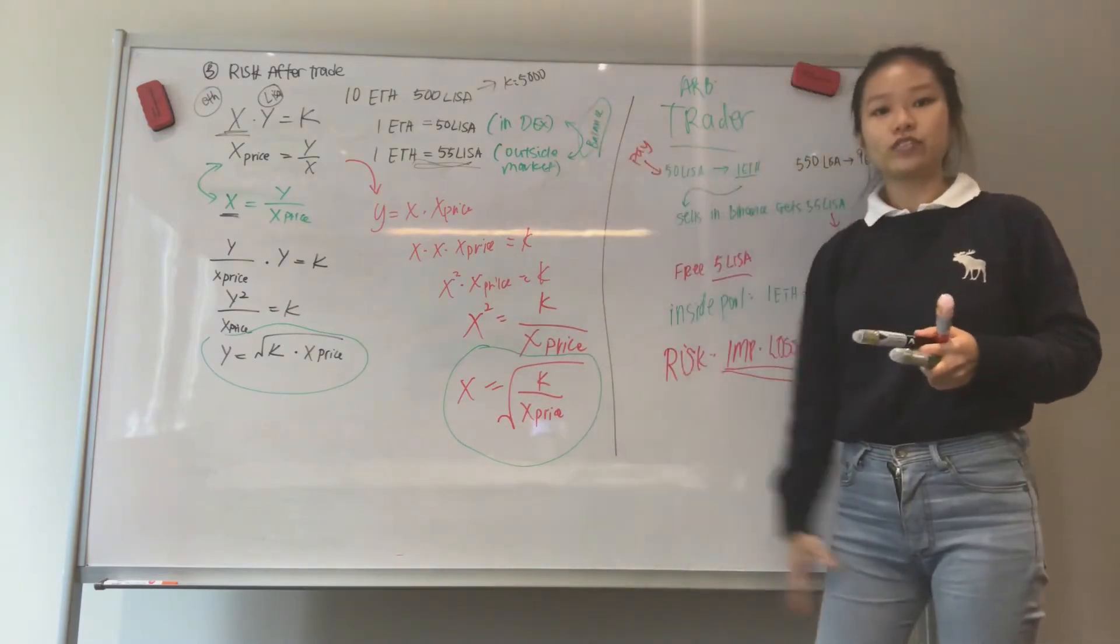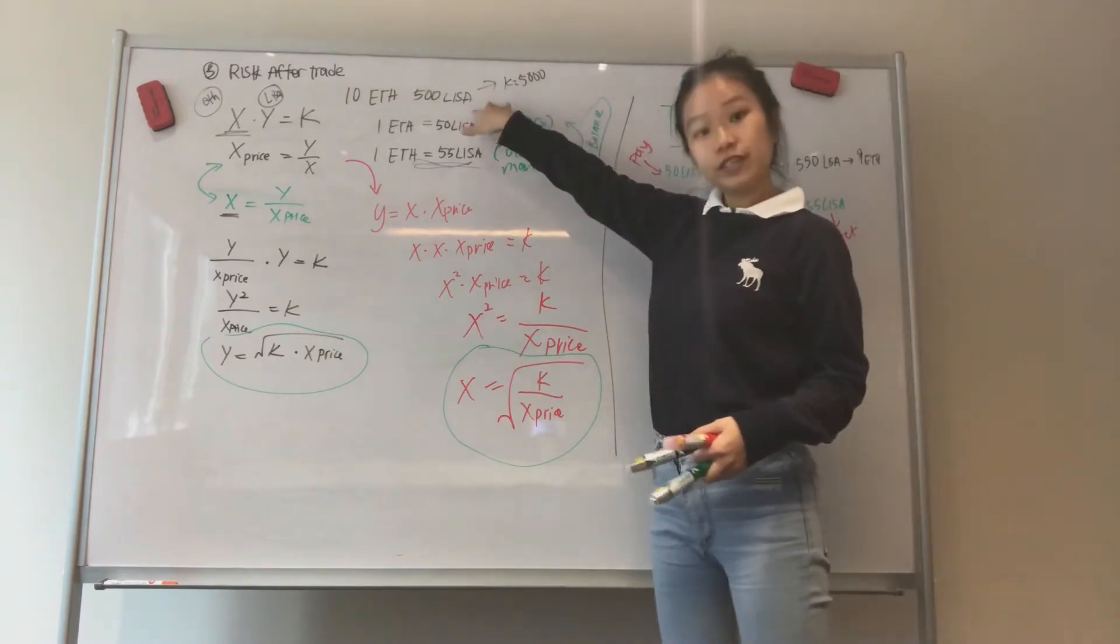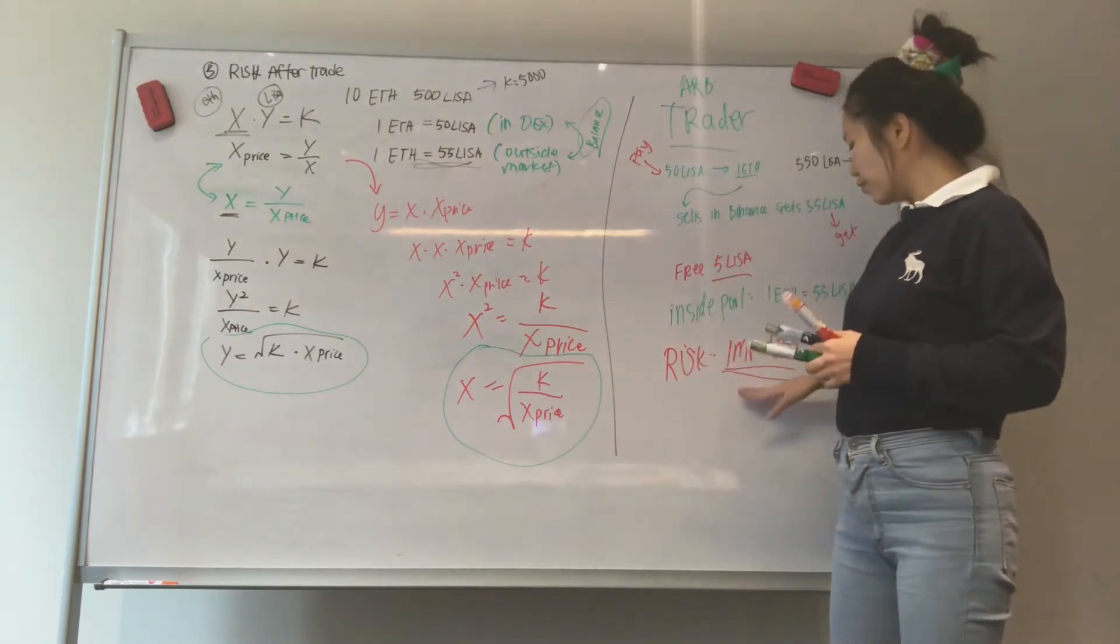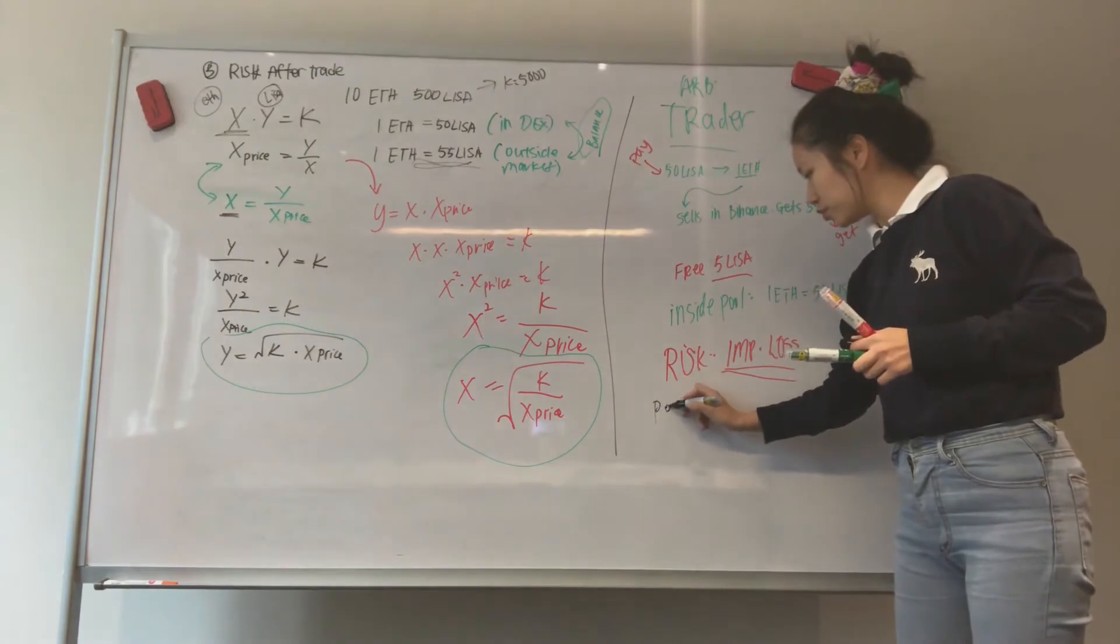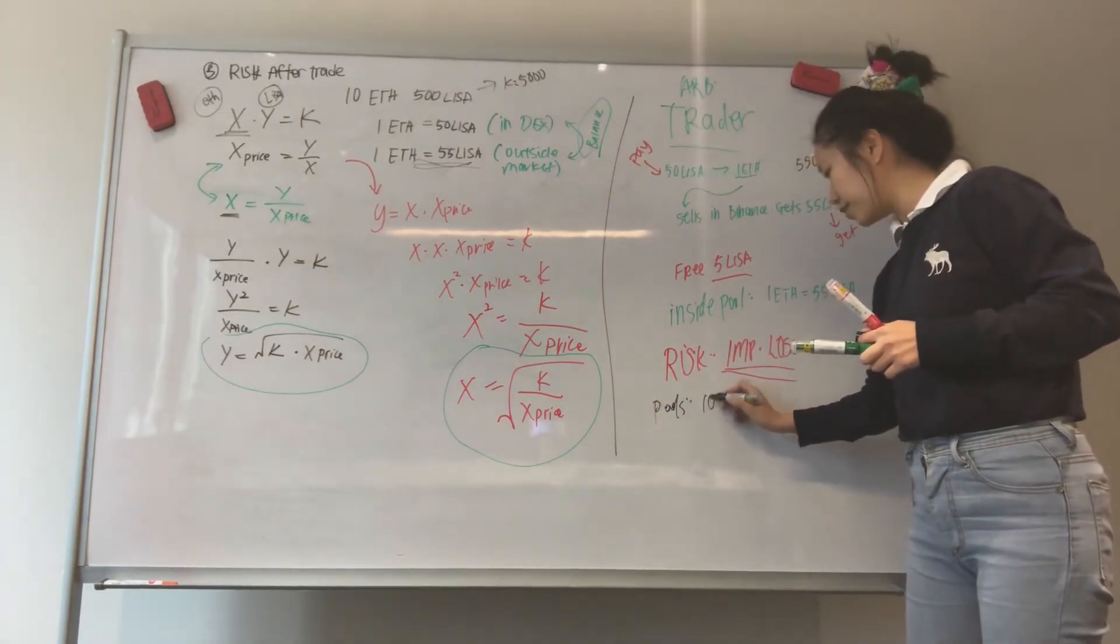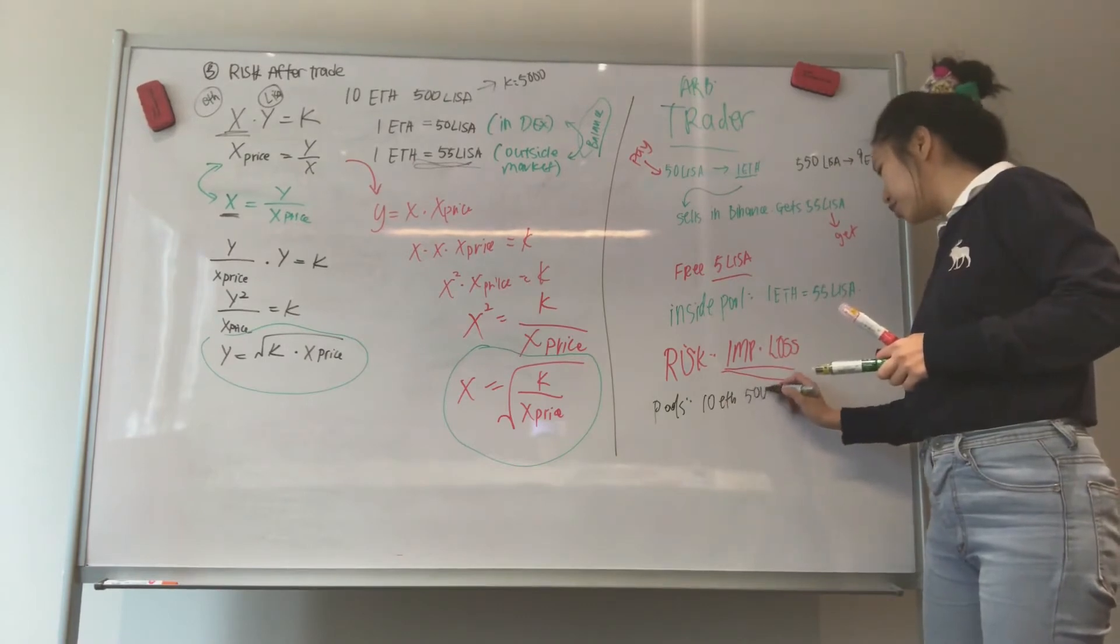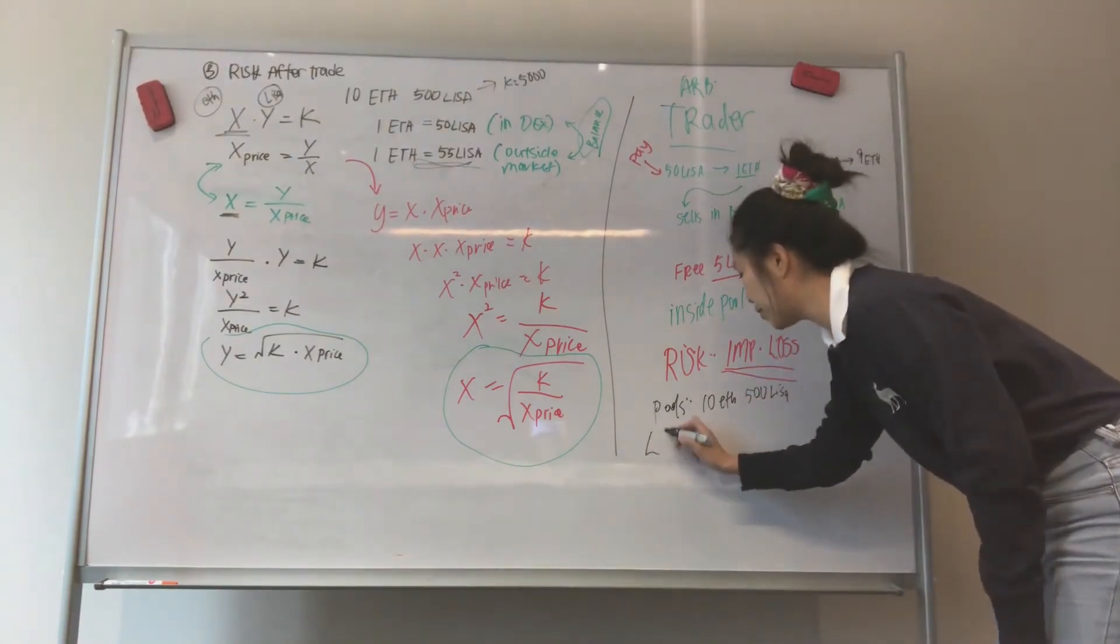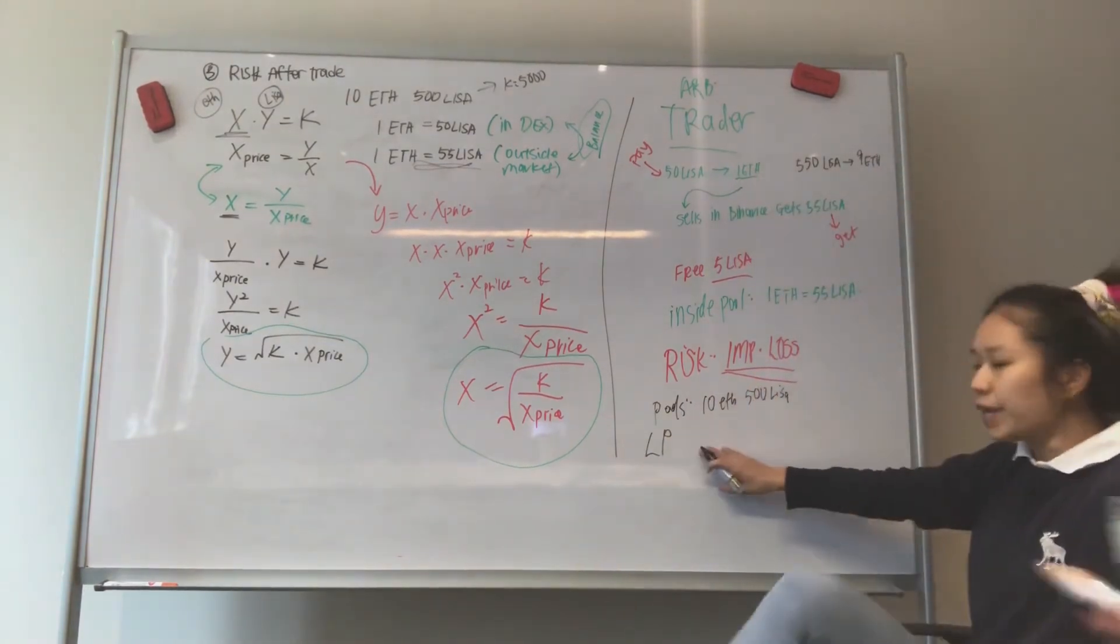So if you just take a snapshot of this, you realize I am earning fees from here and my tokens are still here. So the risk of impermanent loss comes when, with these pools, let's say you have 10 ETH, the pool is 10 ETH and 500 LISA. So you have this thing over here called liquidity providers, LP.